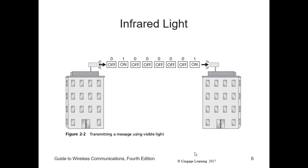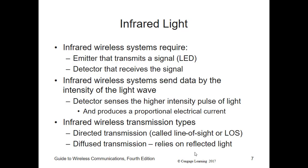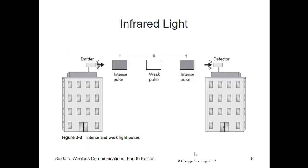Infrared wireless transmissions can be either directed or diffused. A directed transmission requires that the emitter and detector be directly aimed at one another — like pointing a remote control at a television. That's the line-of-sight principle. The emitter sends a narrowly focused beam of infrared light, and the detector has a small viewing area, just like a television remote control. This is why most of us point remotes at TV sets or other controlled devices.